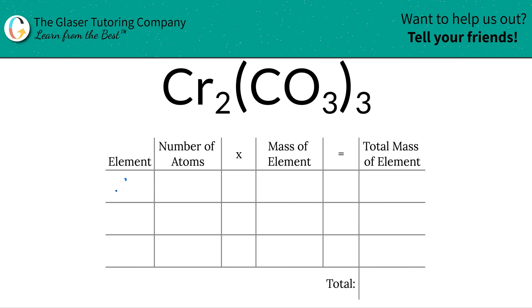I see the elements in the compound: chromium, carbon, and oxygen. Next is to take into account the number of atoms of each, and that's where the subscripts come into play.